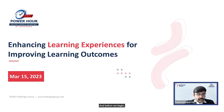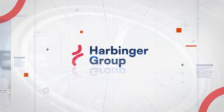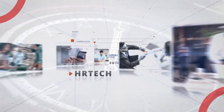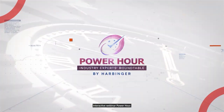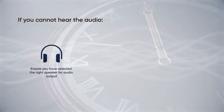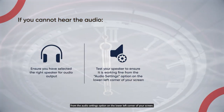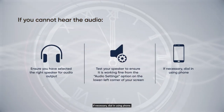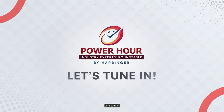Before we begin, let us take a look at a short video with some housekeeping tips. Welcome to Harbinger's flagship interactive webinar, Power Hour. Ensure you have selected the right speaker for audio output. Test your speaker to ensure it is working fine from the audio settings option on the lower left corner of your screen. If necessary, dial in using phone. Let's tune in.